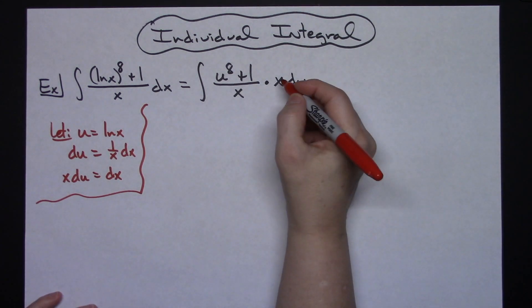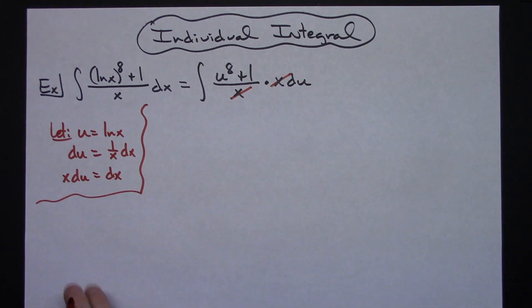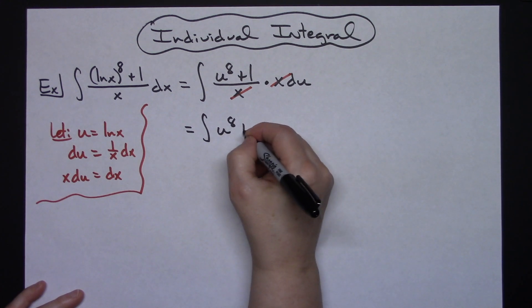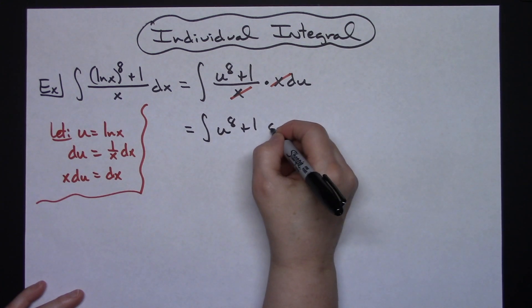Hopefully at that point you can easily see that the x's are going to cross out, which is what we want to happen. So then we'll have the integral of u to the eighth plus 1 du.